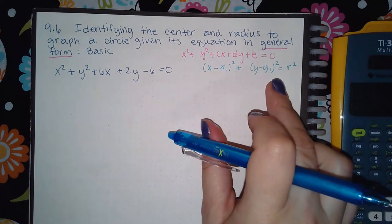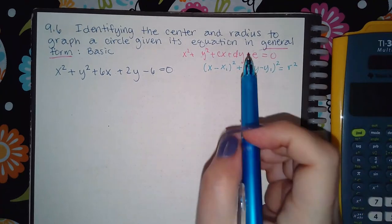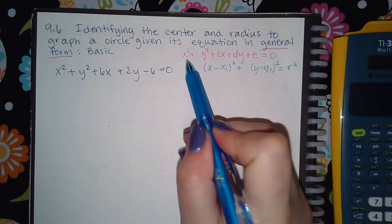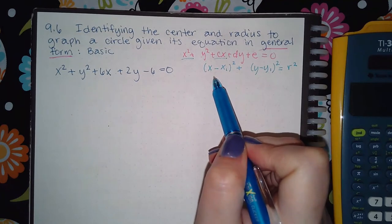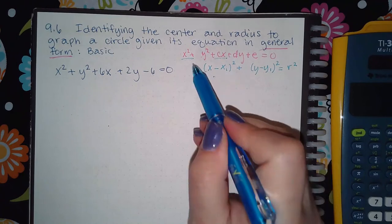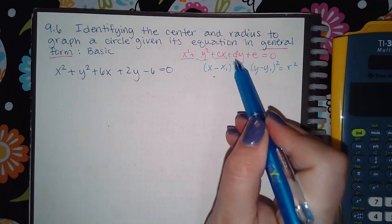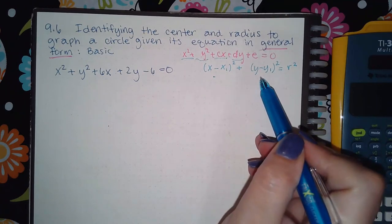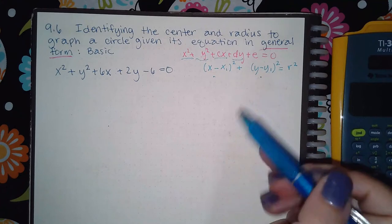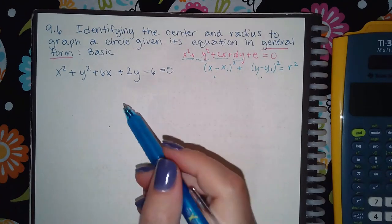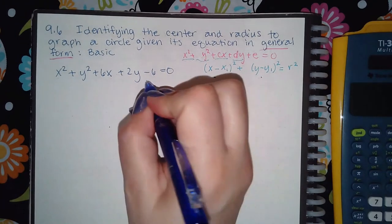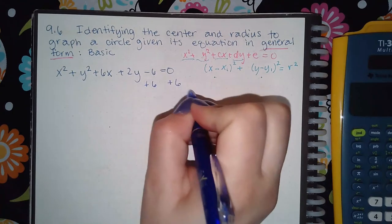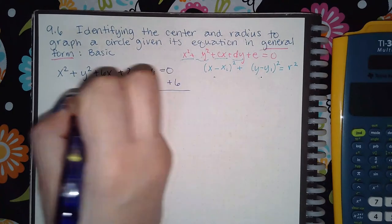We want to get it into standard form. We have a technique called completing the square that will let us take the x terms and the y terms and rewrite them as perfect square binomials. The first thing you want to do is move the constant over to the right-hand side so it's out of the way.